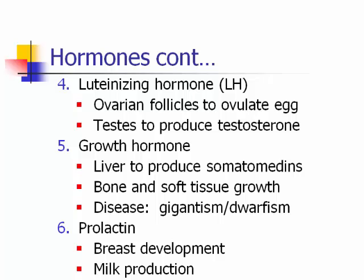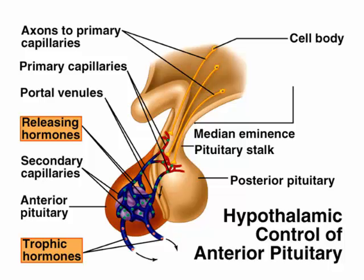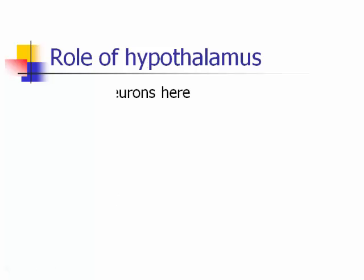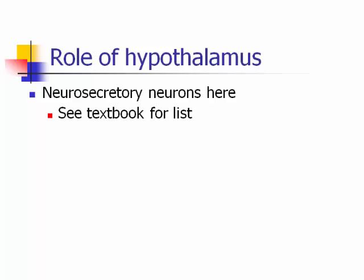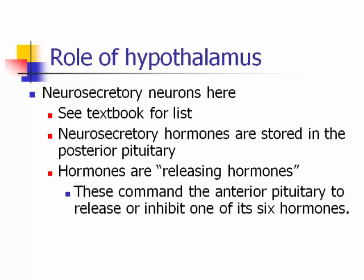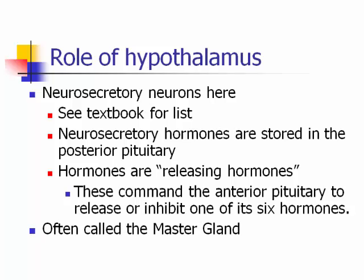Prolactin is involved in breast development and milk production — a couple of these hormones you mainly see in pregnant women. To control the anterior pituitary, it's actually the hypothalamus that does it. The hypothalamus makes neurosecretory neurons that send releasing hormones down to command the anterior pituitary to release or inhibit its six hormones. So the hypothalamus is truly the master gland — it makes the two hormones for the posterior pituitary and controls the six from the anterior pituitary.